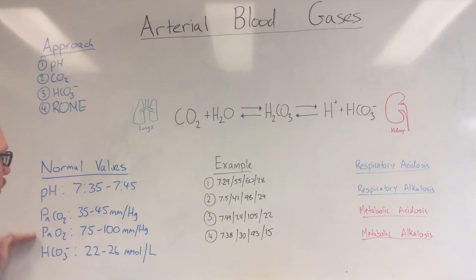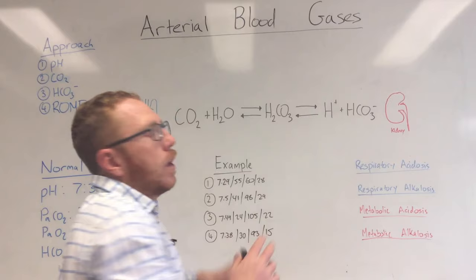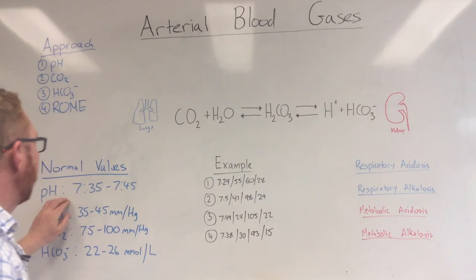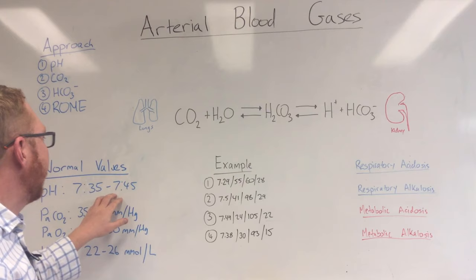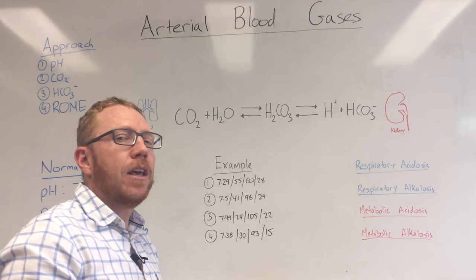Here are your normal values of how your blood gases should normally look. Let's quickly revise the bicarbonate buffering system. This is essentially a system to regulate your hydrogen ions in your body, which is essentially your pH. Your pH, or the power of hydrogen, is the amount of hydrogen ions in your blood, and this is a range of 7.35 to 7.45.